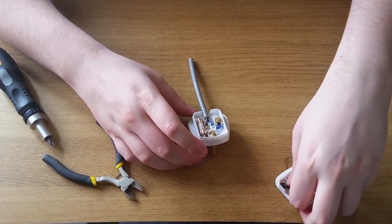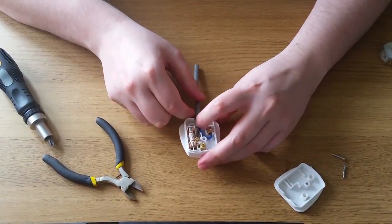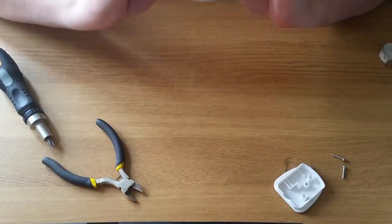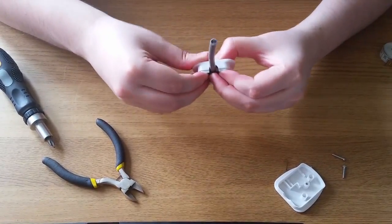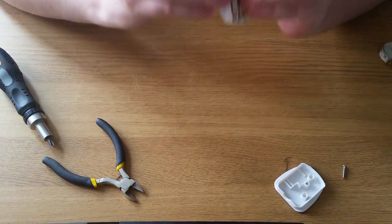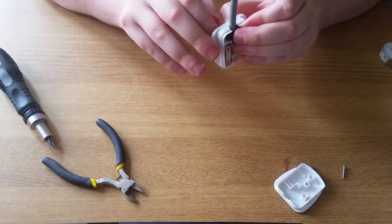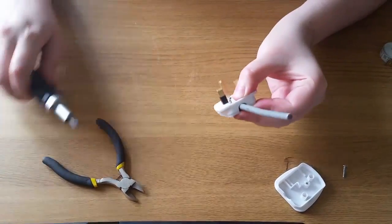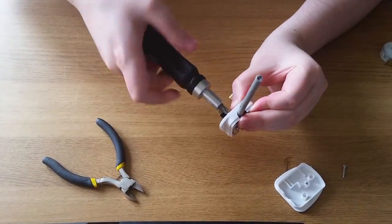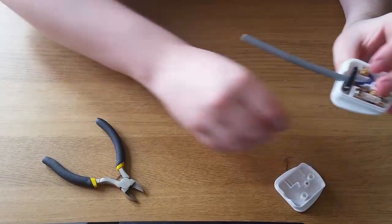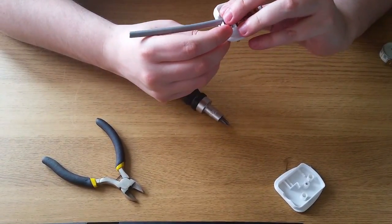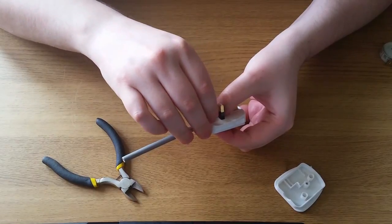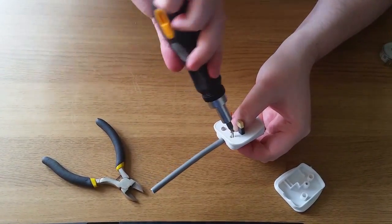Now that I'm happy the wires are in place, it's time to secure the cable with the cable gripper. I'm making sure the cable is centered and flat. Whilst holding the gripper in place, I'm going to insert each screw and tighten them so they keep the gripper in place.